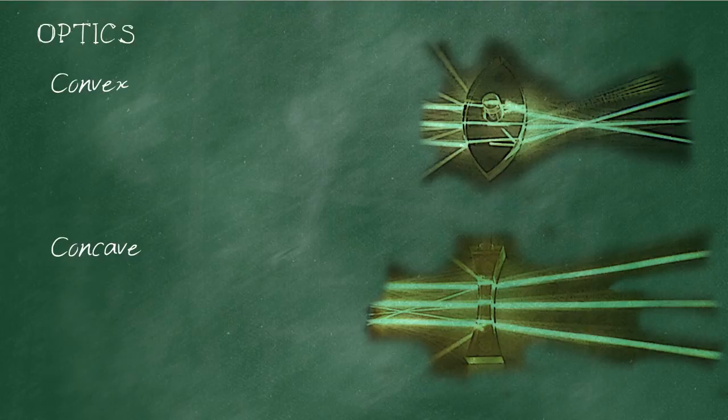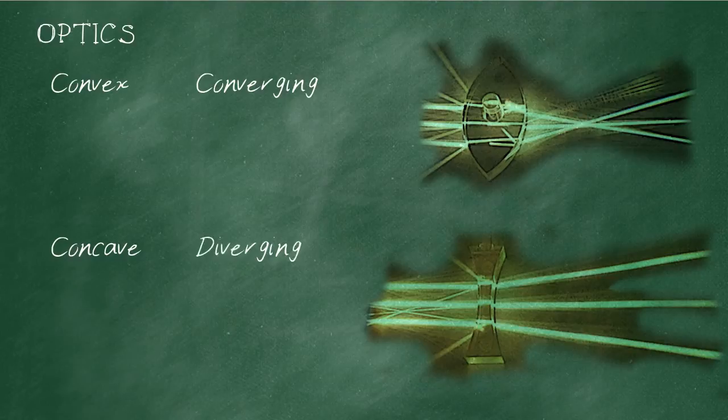Now the convex lens is also a converging lens, and what that means is that light is brought together - light rays are made to come together. The concave lens is called a diverging lens, and this means that after passing through the lens, the light rays spread further out. They diverge.